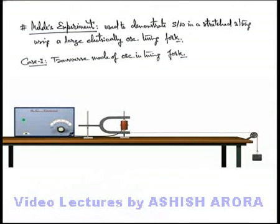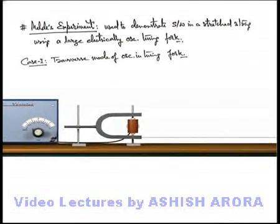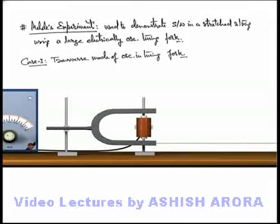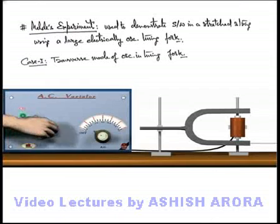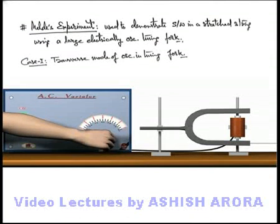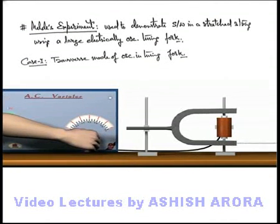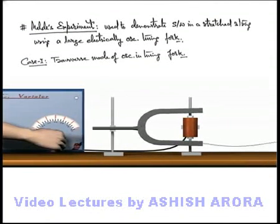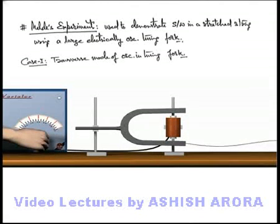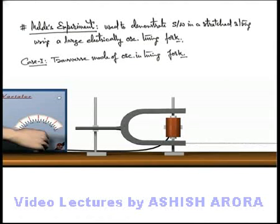Here you can see a tuning fork is horizontally taken along with an electromagnet attached with an alternating source. When the source is switched on, you can see the fork starts oscillating and the arms of the tuning fork will start moving in the direction normal to their length, so it will induce transverse oscillations in the string.